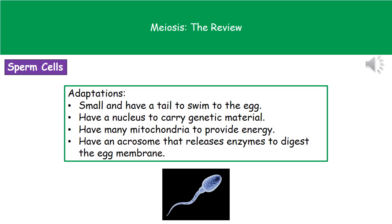A favourite exam question is about sperm cells and their adaptations. They will often ask you to explain how certain adaptations are good for the sperm cell's function. The word 'explain' is important — you've got to give the adaptation and then say how it helps. The first adaptation is that the sperm cell is small and has a tail, which allows it to swim to the egg.